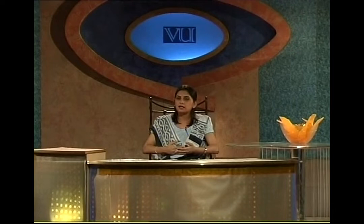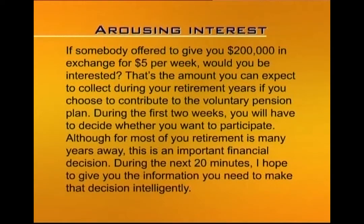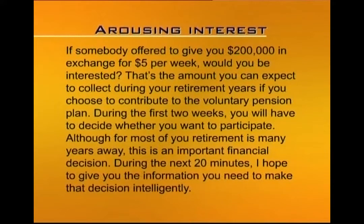The best approach for an uninterested audience is to appeal to human nature — show the audience how they will be affected as individuals. For example, when addressing clerical employees about a pension program, you might open: 'If somebody offered to give you $200,000 in exchange for $5 per week, would you be interested? That's the amount you can expect to collect during your retirement years if you choose to contribute to the voluntary pension plan. During the first two weeks, you will have to decide whether you want to participate. During the next 20 minutes, I hope to give you the information you need to make that decision intelligently.'